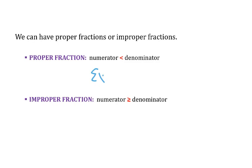So a few examples of proper fractions are 1 half and 3 fourths, because in both of these examples the number up top is less than the number on bottom.